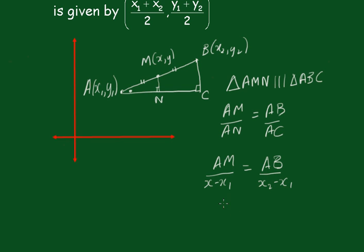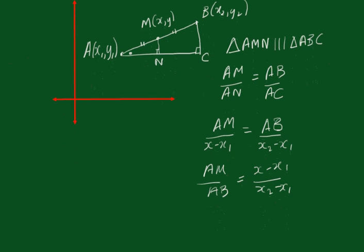Now just rearranging that we'll write that as AM over AB equals (x - x₁) over (x₂ - x₁). Now the ratio of AM to AB is 1 over 2, because AM is half of AB. Therefore we can see 1/2 equals (x - x₁)/(x₂ - x₁).